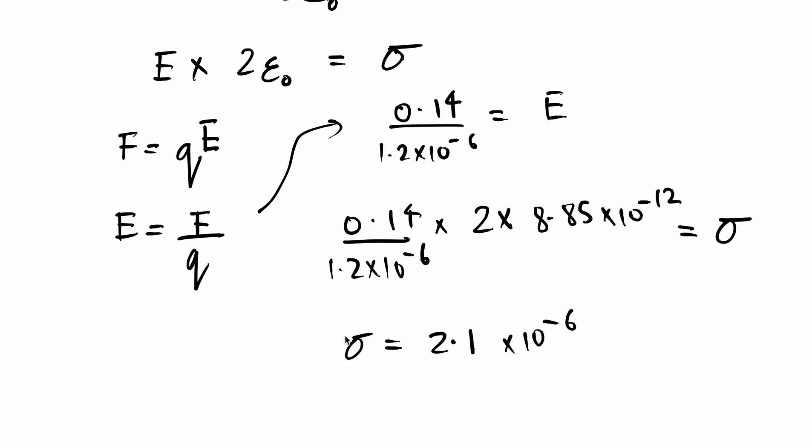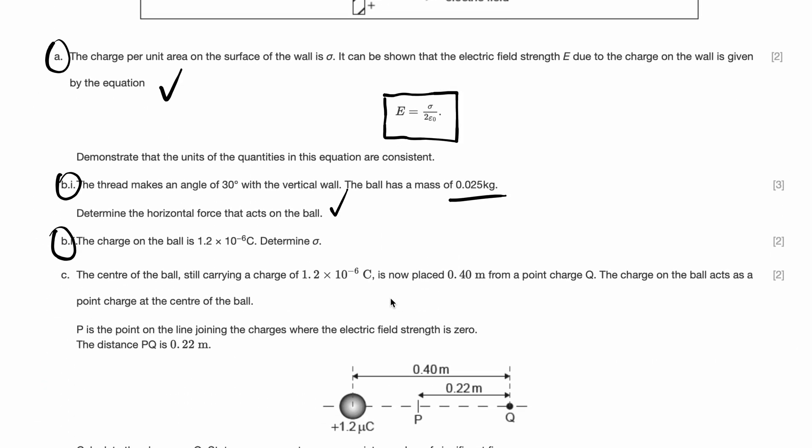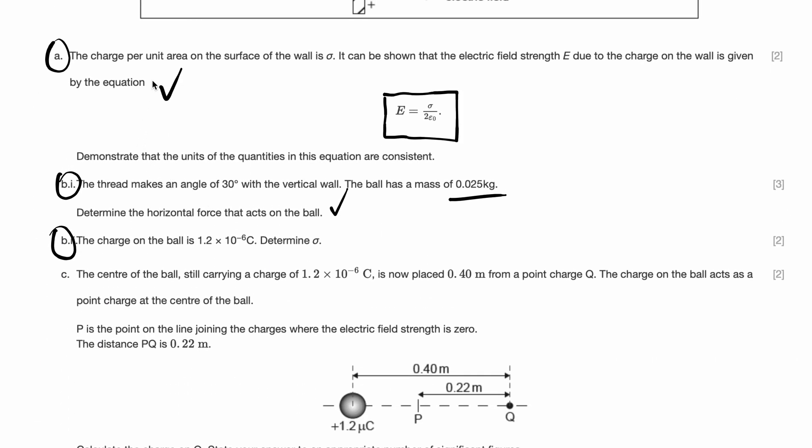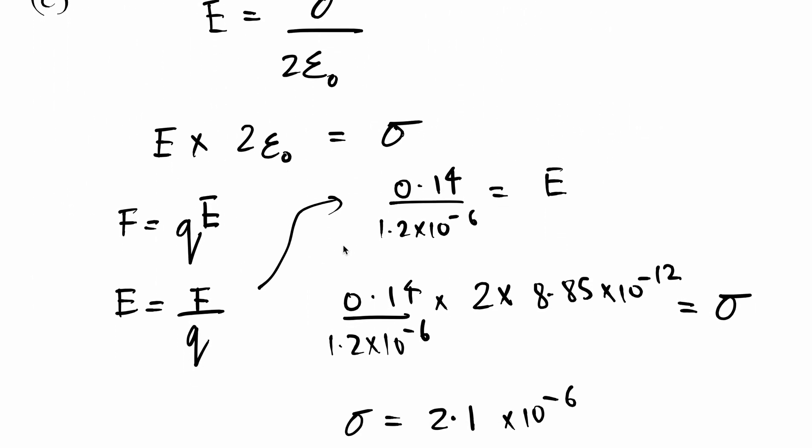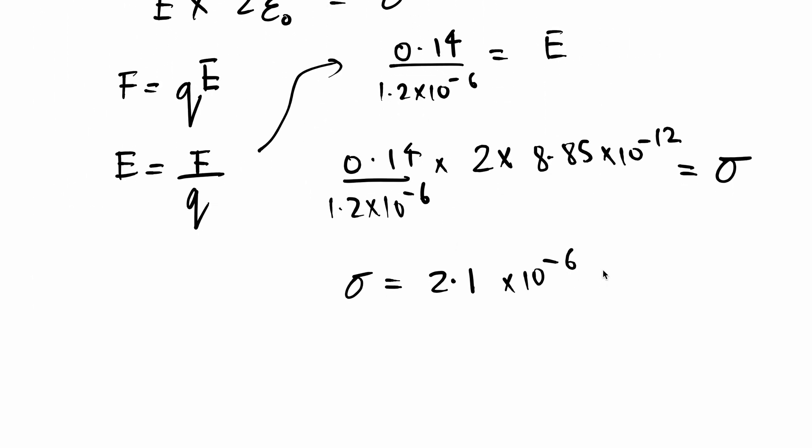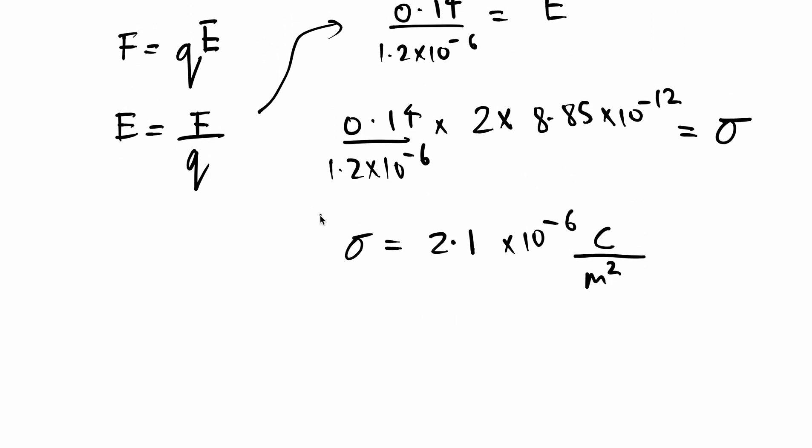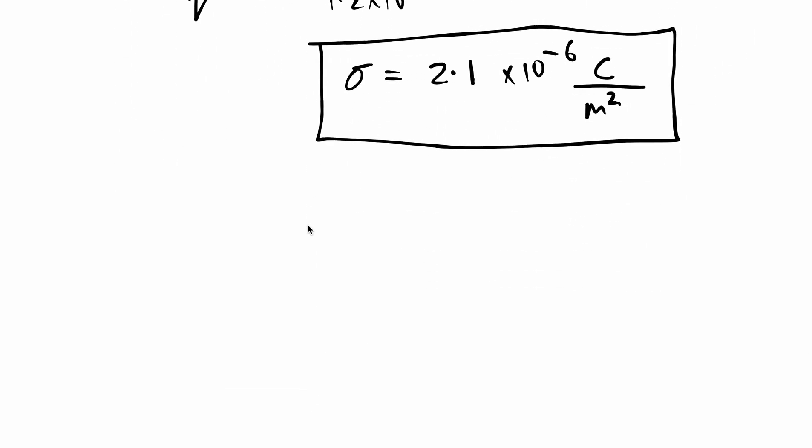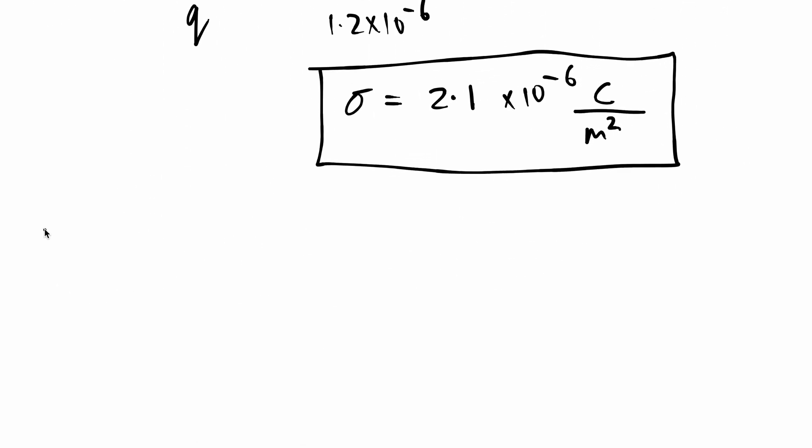I just put everything in our equation and solve for sigma. So what do I get using this? I get that sigma is equal to 2.1 into 10 to the power of negative 6. That is sigma. And what's the unit for sigma? We know it's charge per area square. It is charge per unit area. Coulomb by meter square. That is sigma. And finally they're asking us part D.